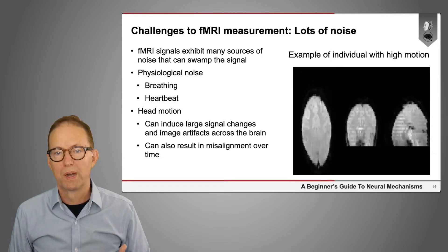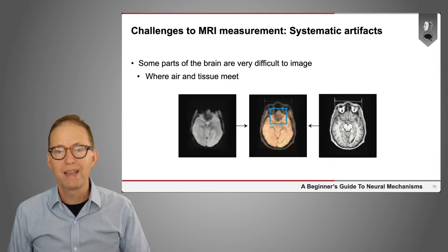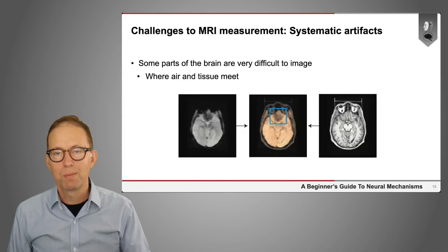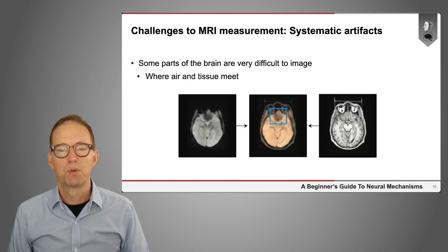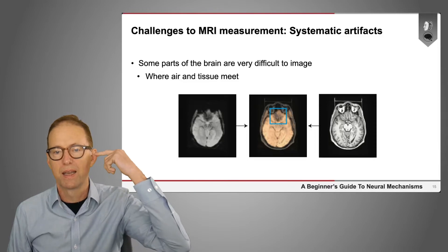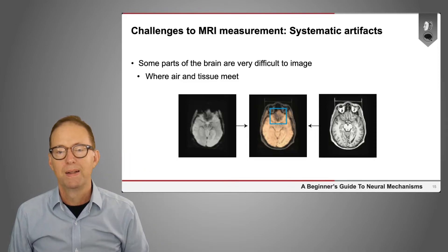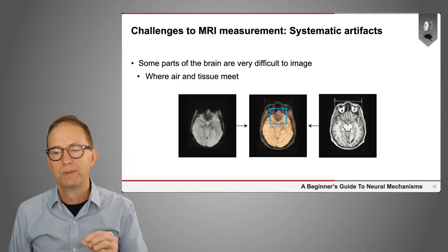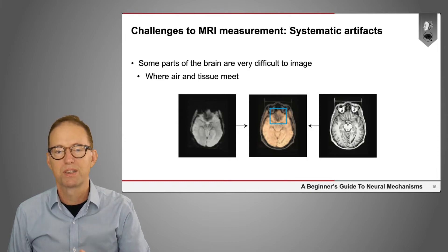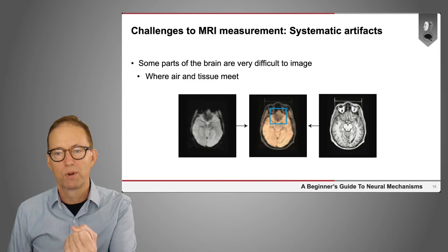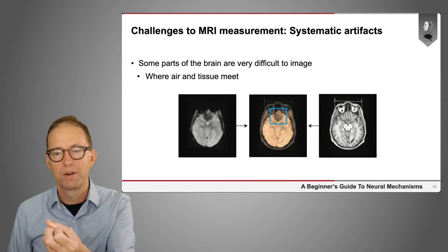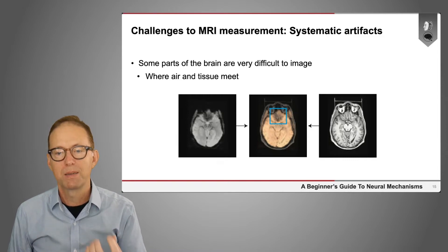There are also other systematic artifacts that make some parts of the brain very difficult to image. In particular, areas near where air and tissue meet — such as above the sinuses and above the ear canals — have differences in magnetic susceptibility between air and tissue that distort the signal. For example, there's a dropout in the middle of the orbitofrontal cortex: where there should be brain, there's a big hole in the image.